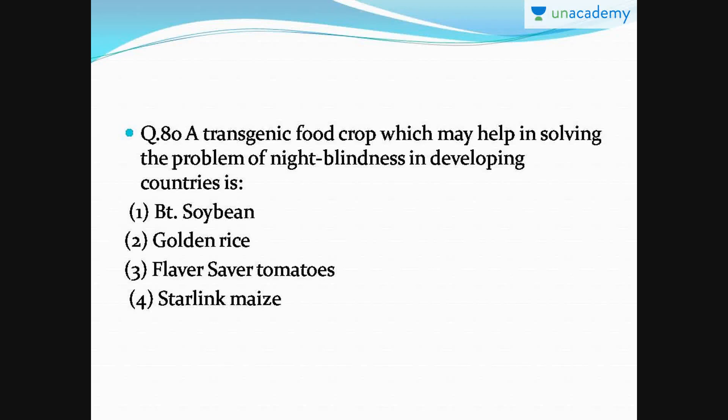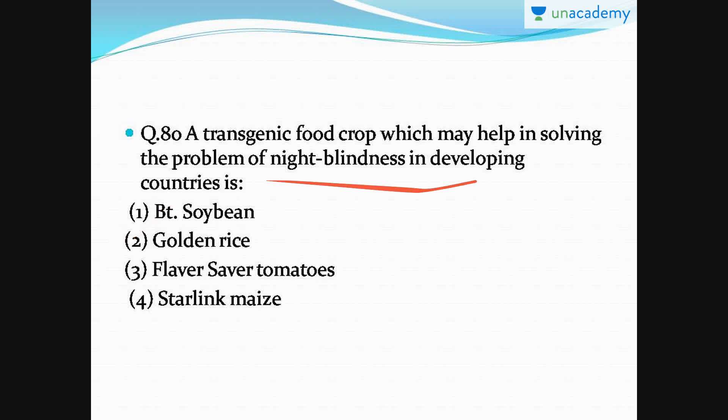Question number 80: a transgenic food crop which may help in solving the problem of night blindness in developing countries. The correct answer is option number two — golden rice. Night blindness is caused by deficiency of vitamin A, and as you would have read in NCERT, golden rice is rich in vitamin A and can therefore help solve the problem of night blindness.